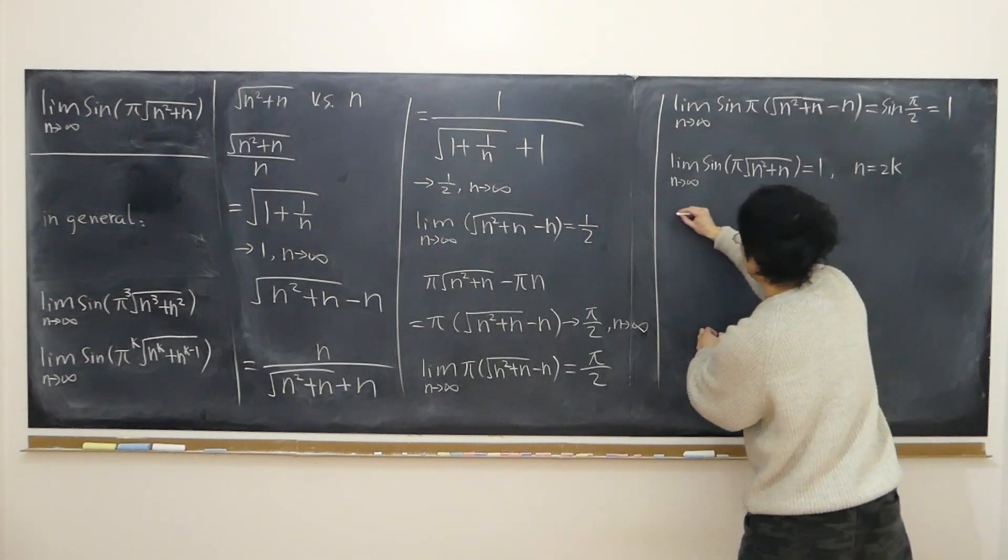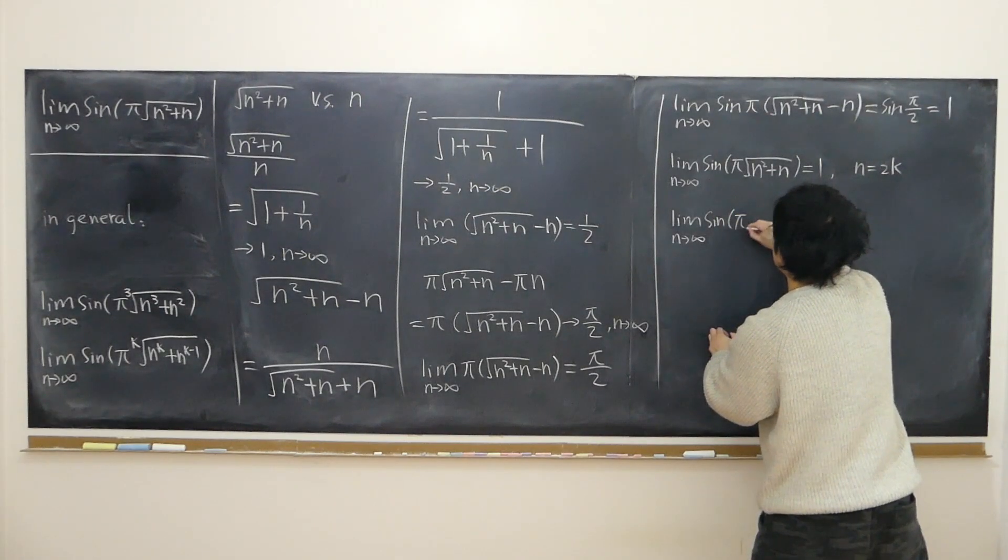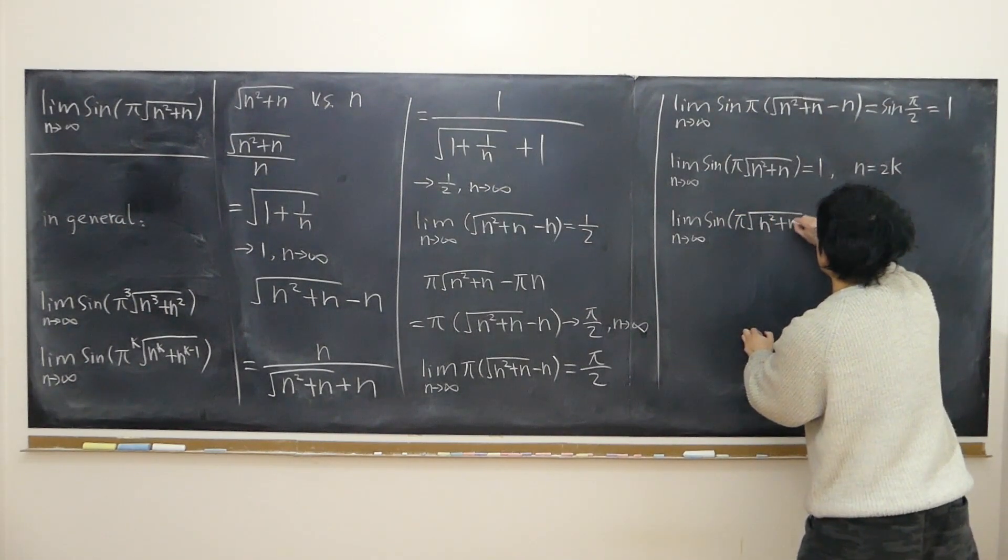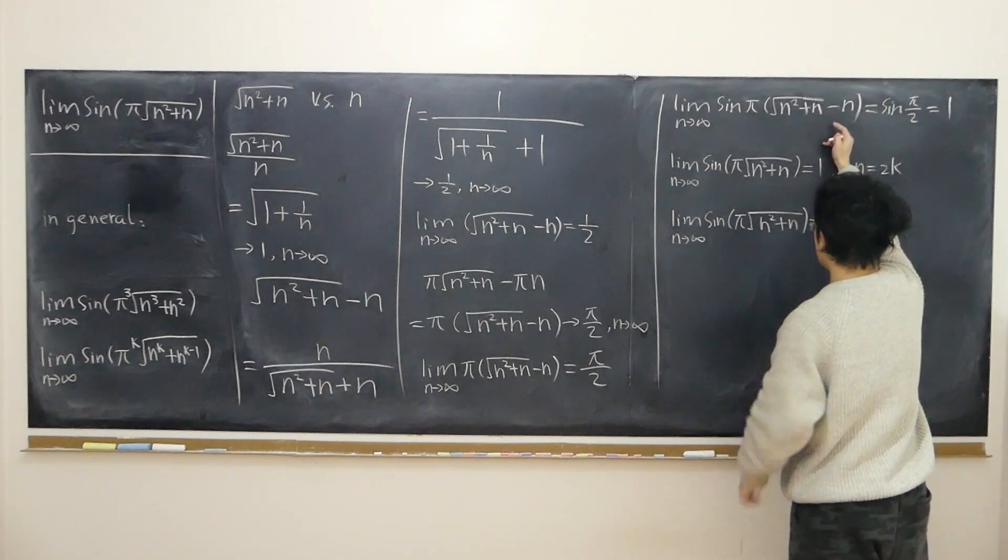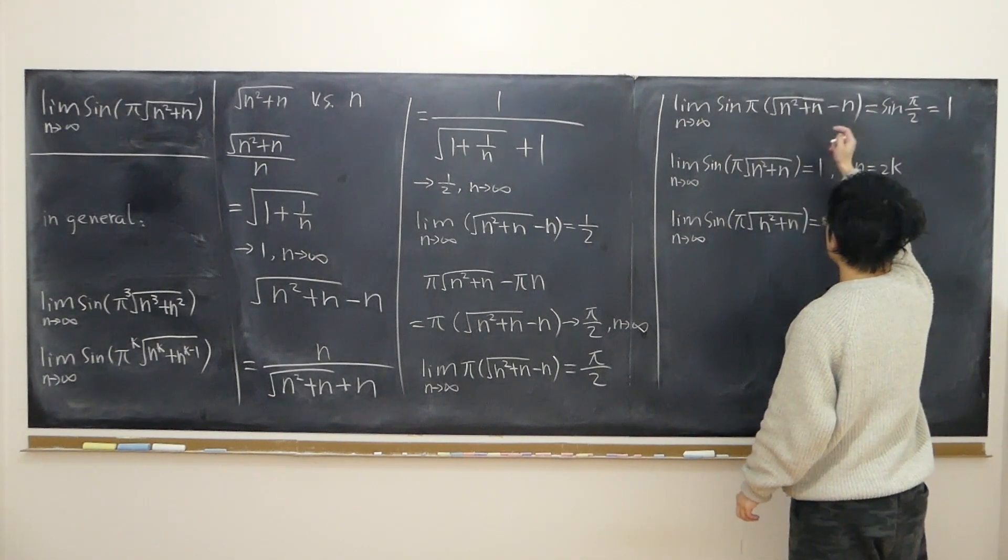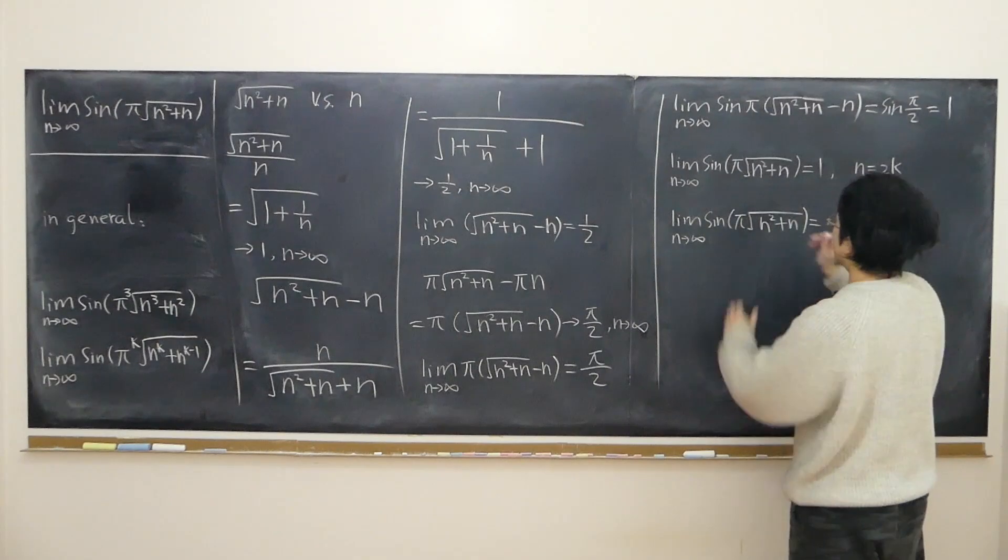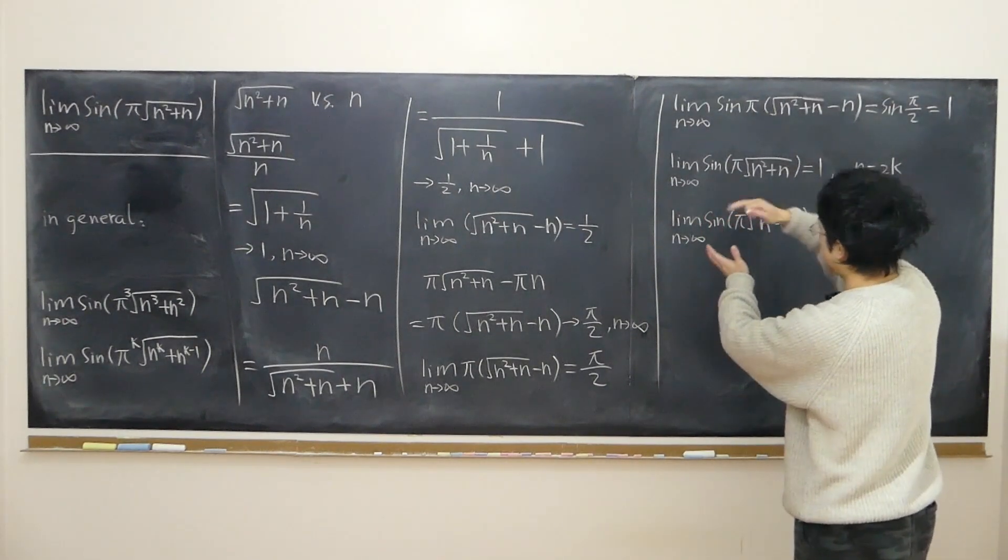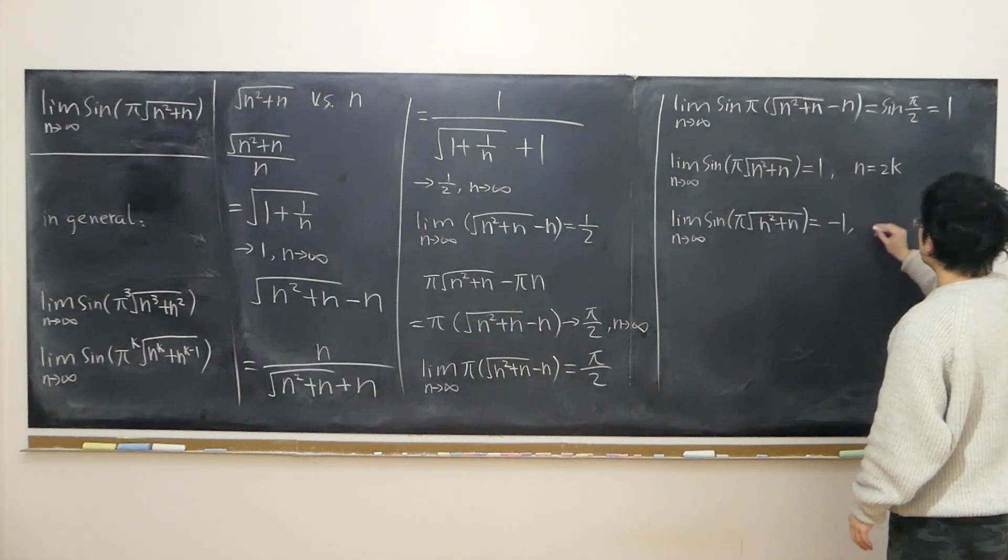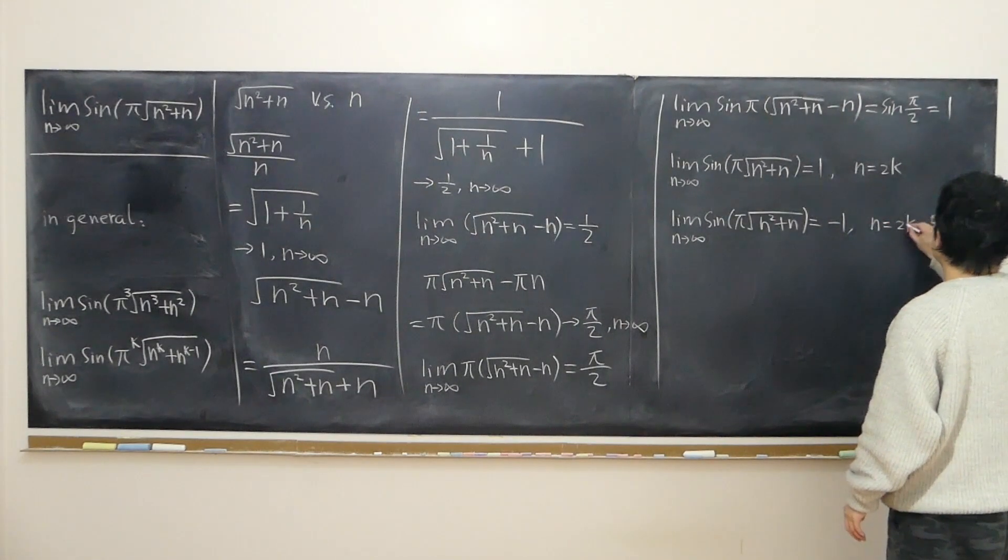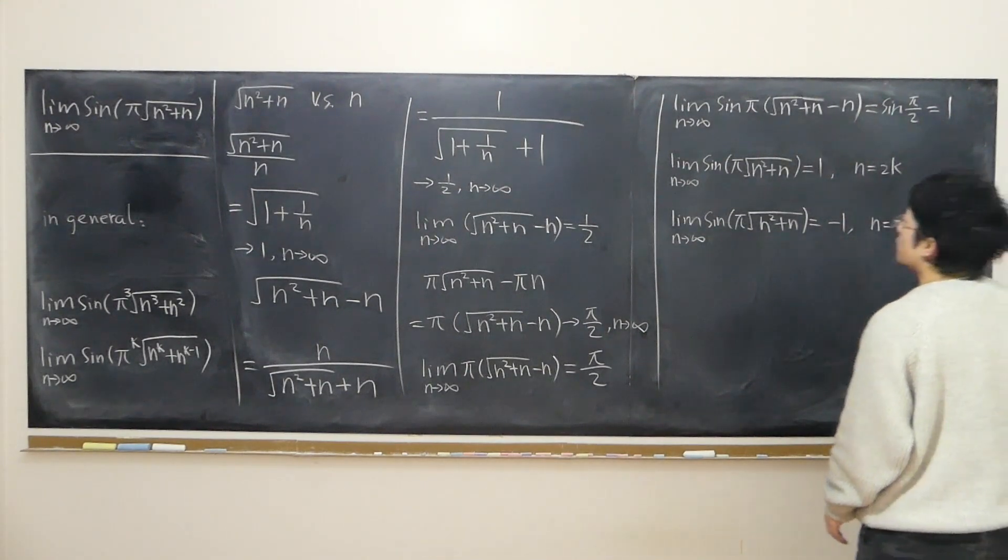When n is odd, what's going to happen is that the limit as n approaches infinity of sine of π times square root of n squared plus n equals—if we just minus or plus some odd multiple of π, then all we have to do is put a negative sign in front. Just remember the unit circle. So negative one when n is odd, like 2k minus 1 or whatever.